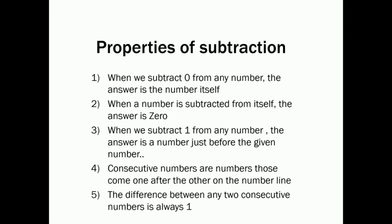Second property: when a number is subtracted from itself, the answer is zero. It means that when we subtract any number from the same number, we will get zero. For example, seven minus seven equals zero.